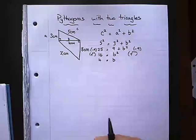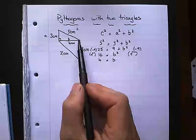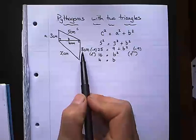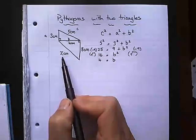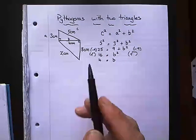Now I've got this triangle. I've been given two lengths which means I can work out the other length. Because it's a right angle triangle I can use Pythagoras.